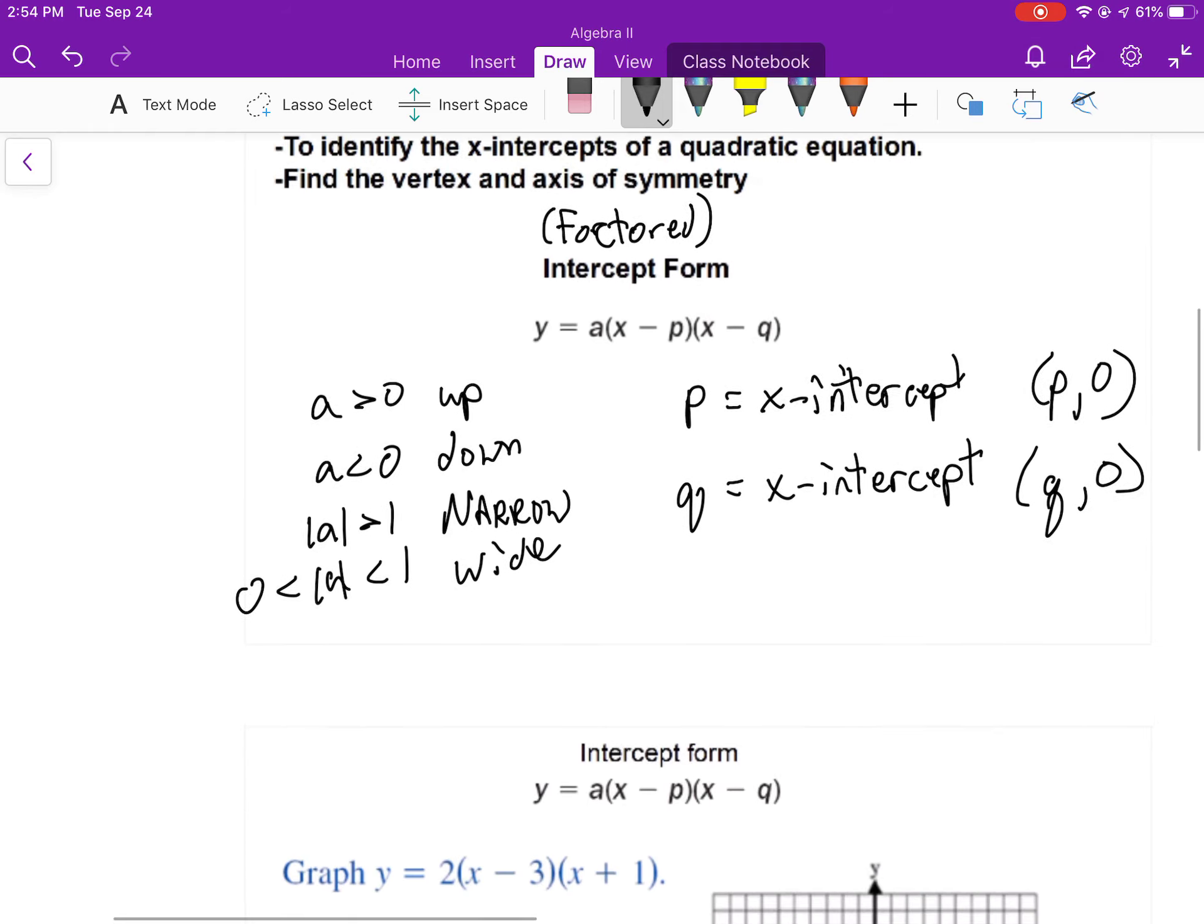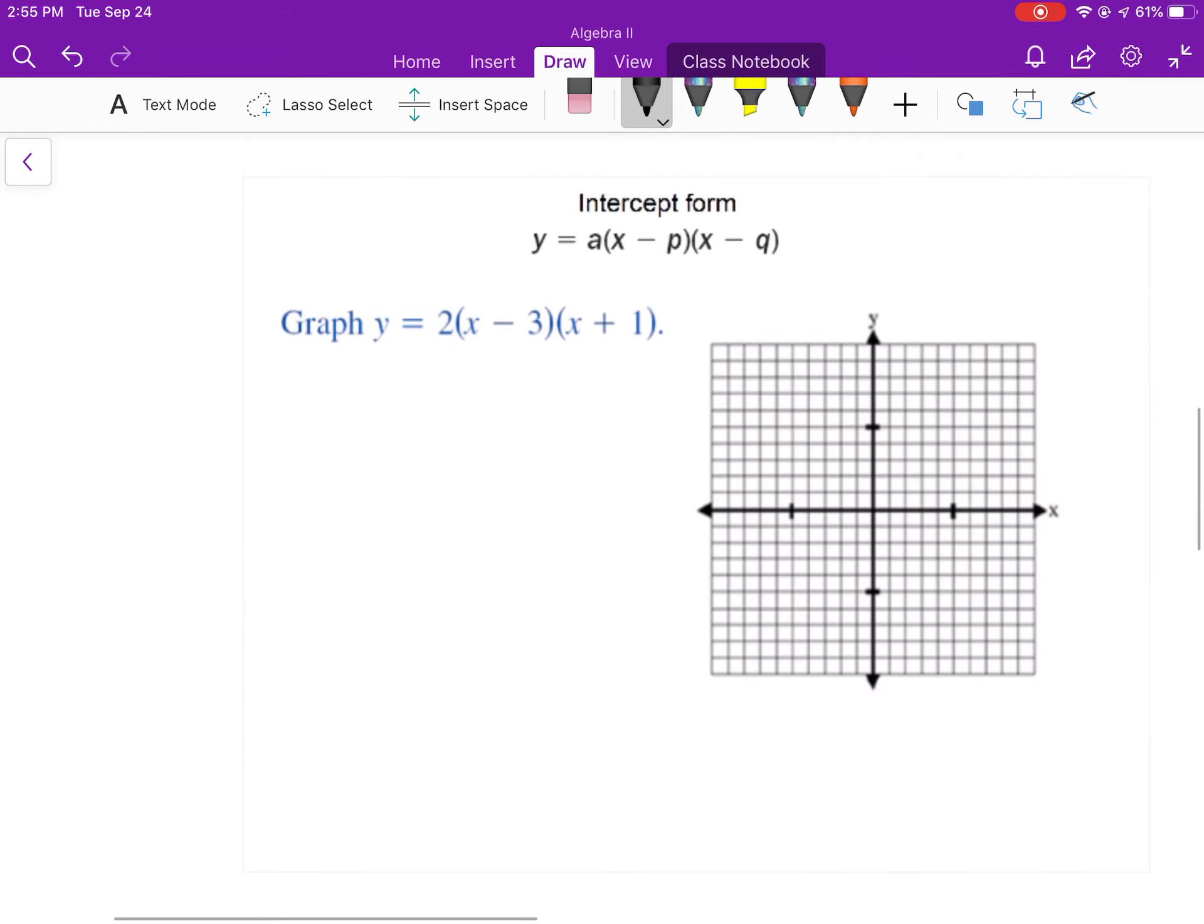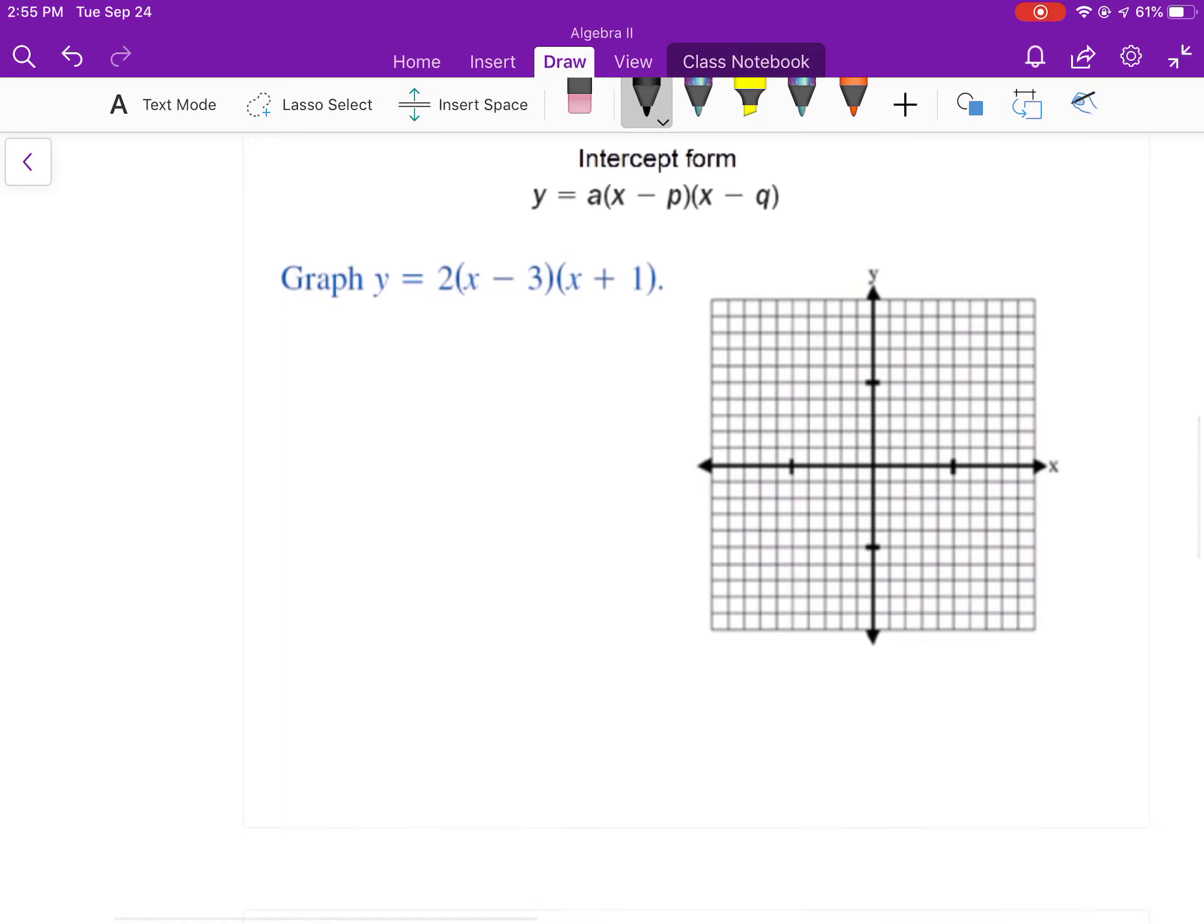It's all about recognizing what form it's in and how to differentiate between which method to go about in graphing. So this is an intercept form, so I'm just going to look at P and Q. The minus is part of the formula, so P is 3. I've got to make that into minus a negative 1, so Q is negative 1.